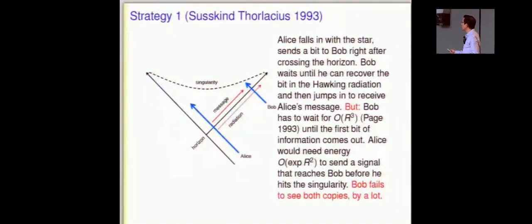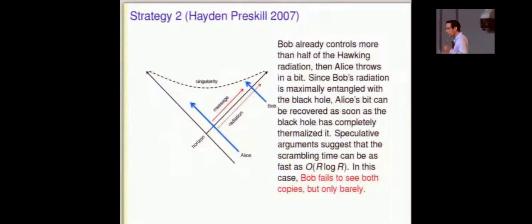So Bob has to wait for half of the black hole to evaporate, measure the Hawking radiation version of Alice's bit, then jump in and try to see the other copy, and he fails by a lot. That's a calculation. I won't show it, but basically the point is that Bob pretty soon hits the singularity, no matter what he tries to do. And he has to receive Alice's bit before that happens, and because of enormous exponential redshifts between Alice's infall time and Bob's near the horizon, Alice has to send her signal with an exponentially large frequency, in other words, in a quantum whose mass is exponentially larger than that of the entire black hole. It's not even close to possible.